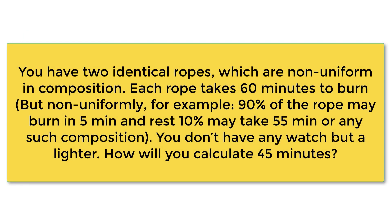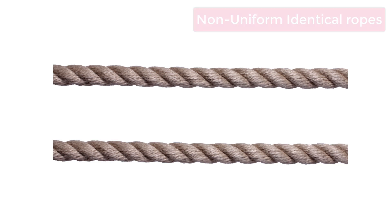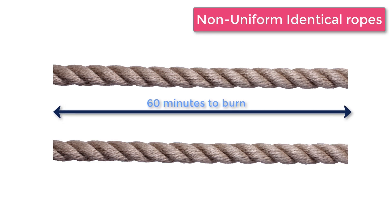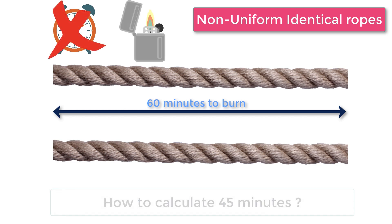You have two ropes which are non-uniform in composition. Each rope takes 60 minutes to burn, but the burn is not uniform — 90 percent of the rope may burn in five minutes and the remaining 10 percent may take 55 minutes, or any such composition. You don't have any watch, but you do have a lighter. How will you calculate 45 minutes?